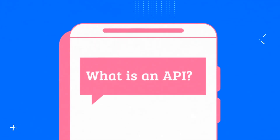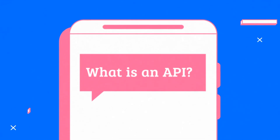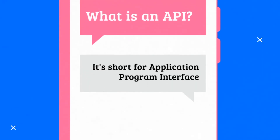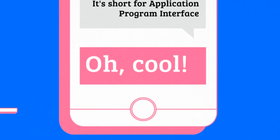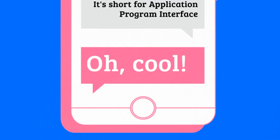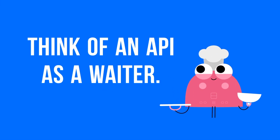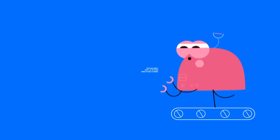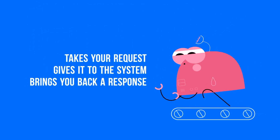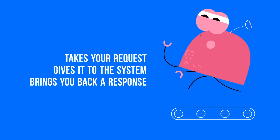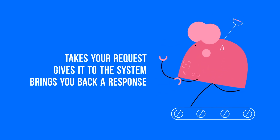Before we start, let us understand what an API is. An API is short for Application Program Interface — a set of clearly defined methods of communication between various software touchpoints. Think of an API as a waiter in a restaurant that takes your order — in this case the request — gives it to the kitchen — in this case the system — and brings you back food — in this case the response.